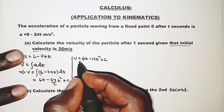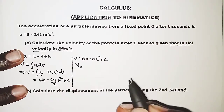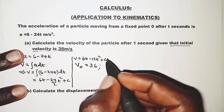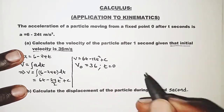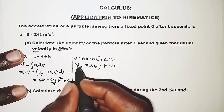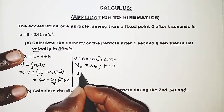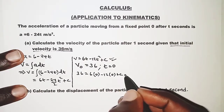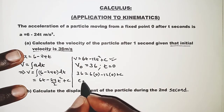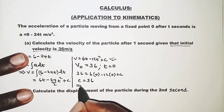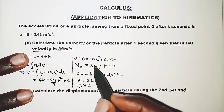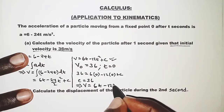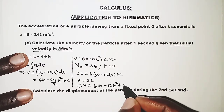The initial velocity — that is velocity when time is zero — is 36 meters per second. Substituting t = 0 into the equation: 36 = 6(0) minus 12(0)² plus c. So c is equal to 36. This implies the velocity equation is v = 6t minus 12t² plus 36.